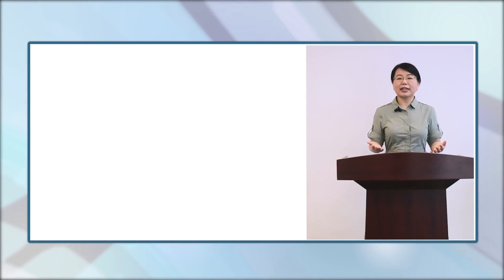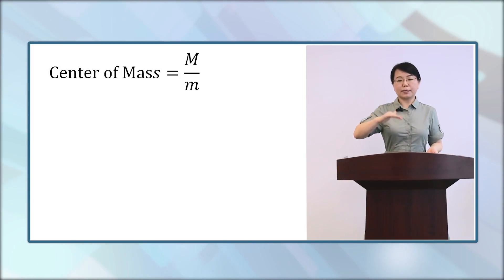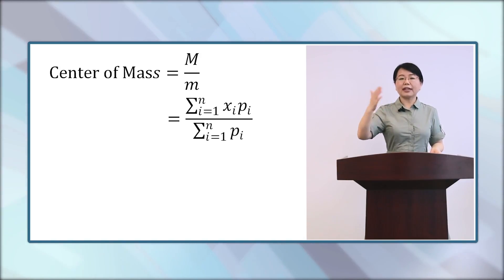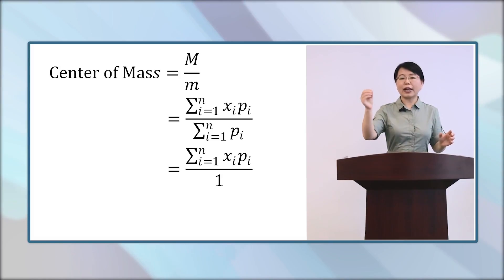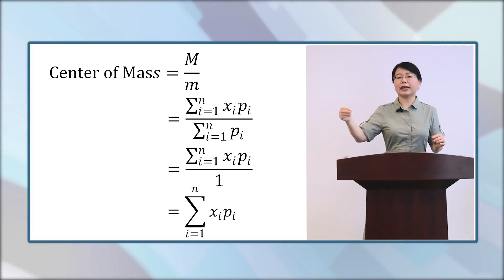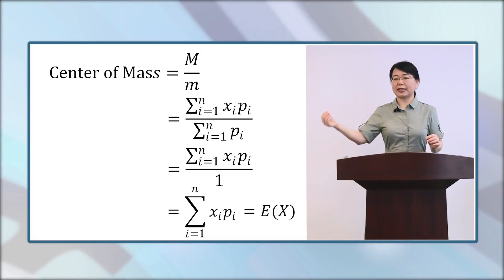Recall that the center of mass is equal to M over little m, that is, the total moment over the total mass. Then it is equal to the sum of Xi Pi over the sum of Pi. But here, for probability, the sum of the probabilities is 1. So actually, it is equal to the sum of Xi times Pi, and is equal to the expectation of X.